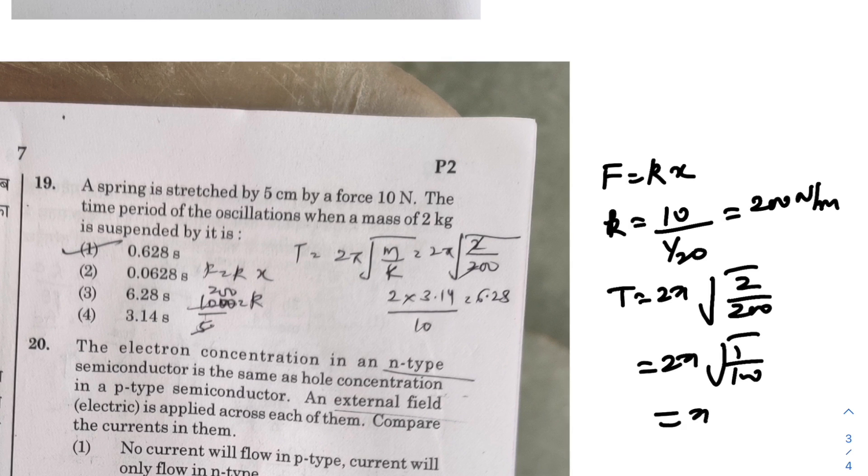So now the time period is 2π root of m by k, 2 upon 200. That is 2π upon 1 by 100. So it is 2π by 10. So it comes out as π by 5. π by 5 means 3.14 by 5, that comes out as 0.628 seconds. So this is option 1.